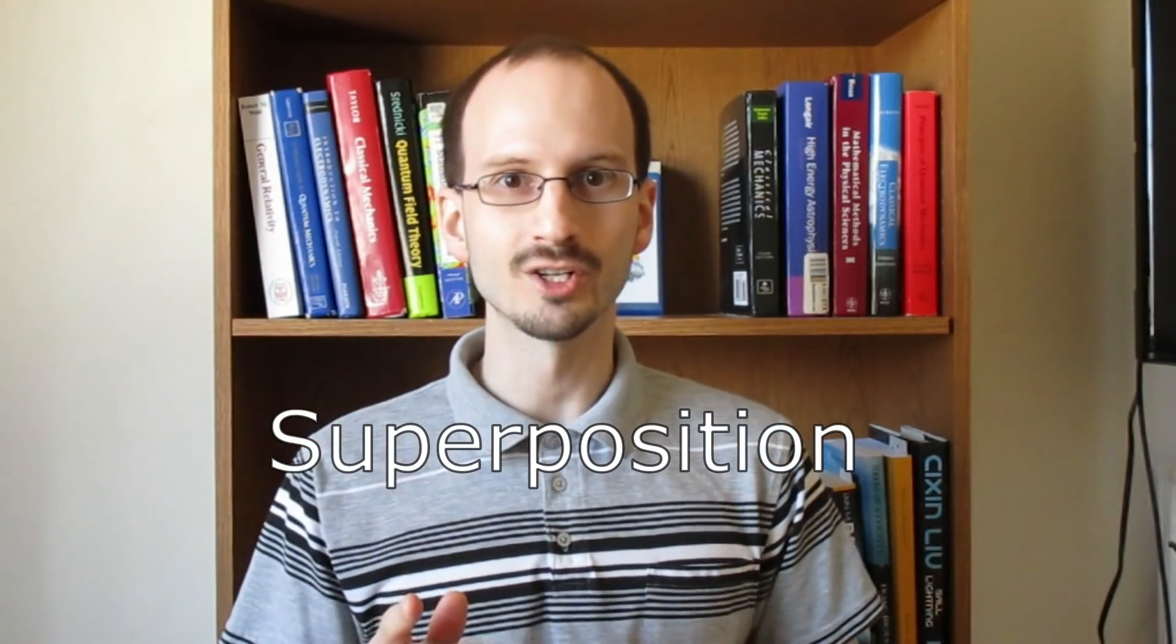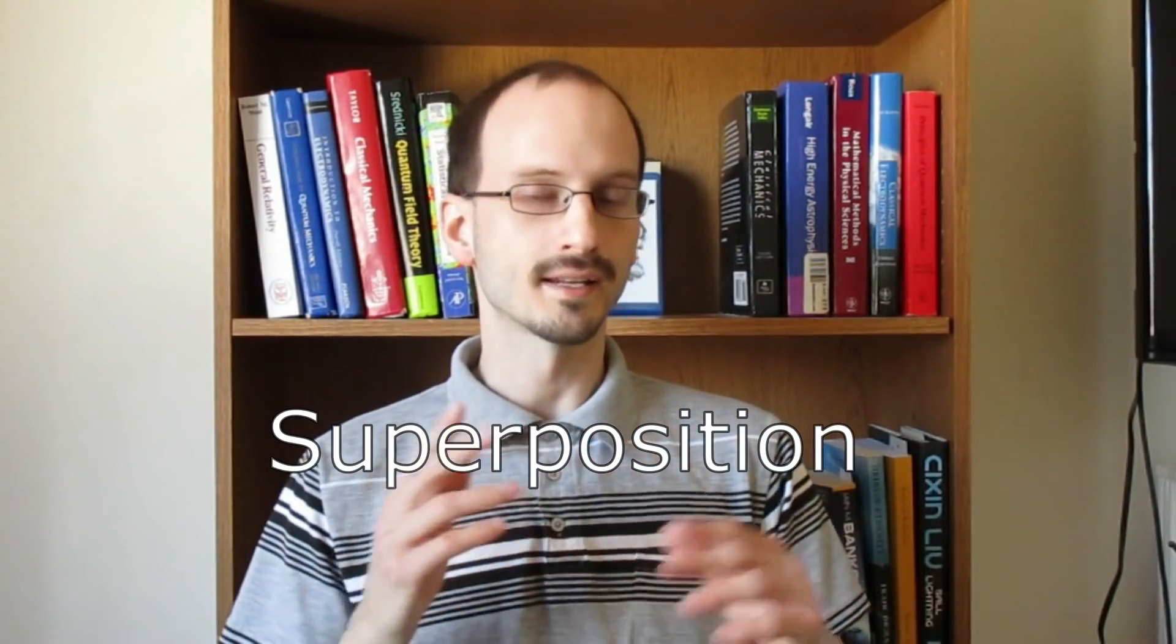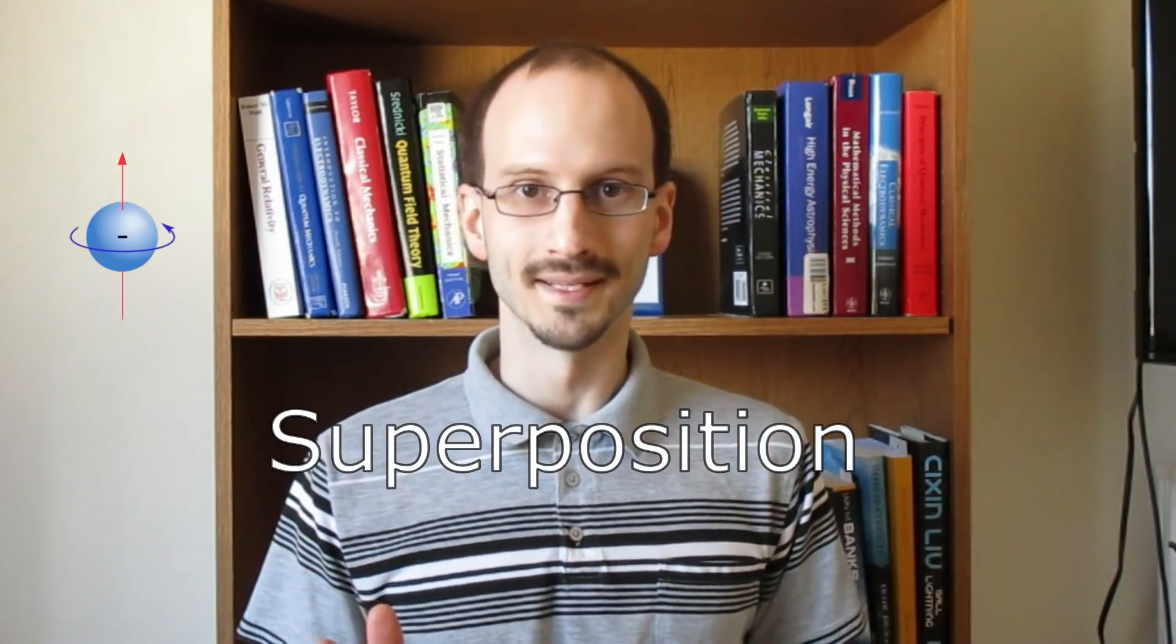But before we get to entanglement, there's another concept we have to look at: superposition. So let's look at the classic, easy-to-understand example, electron spin.